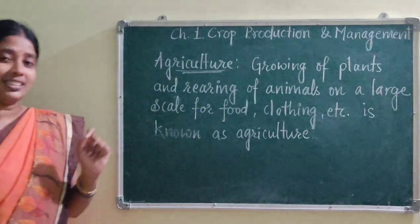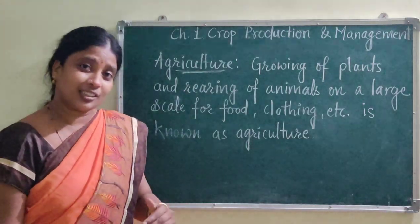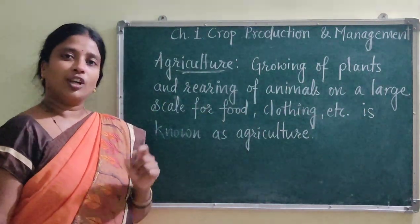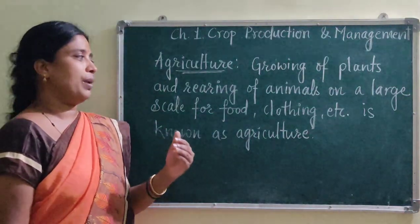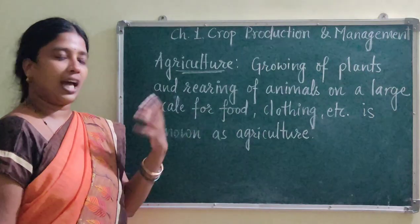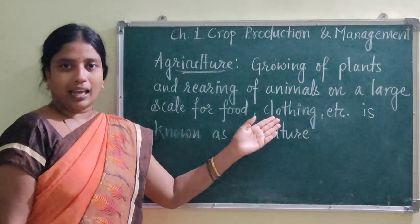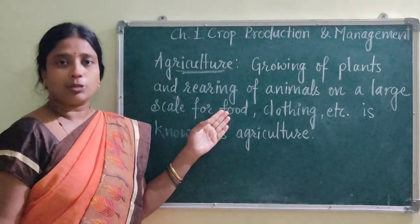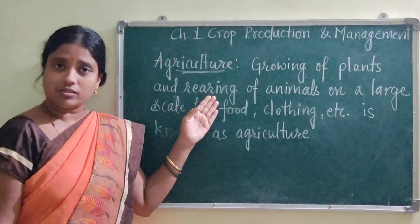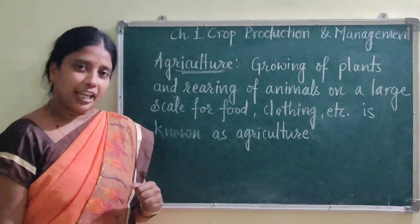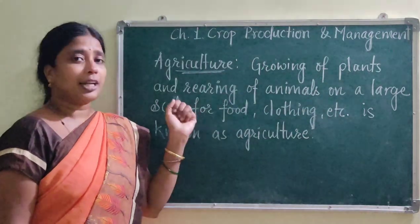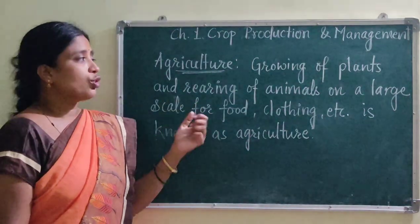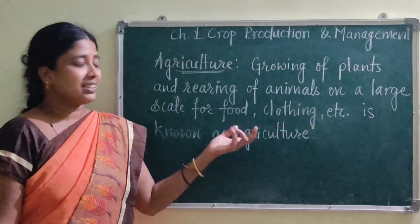After we undergo a series of actions on cotton, we get cotton thread, then yarn is made, and then clothes are stitched. So indirectly, we depend upon plants for our clothes as well. Animals also provide us food. We get honey from honeybees, meat from goat and chicken, and eggs from hen. These are all poultry products obtained from animals.